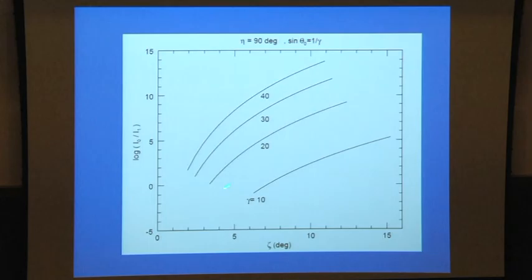You see the brightness will change by huge factors. In fact, any bending, any jet which has got a bend, that bend should not be visible to you. Because it will be fainter.